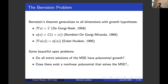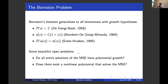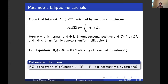Rather than pursue those two questions, a natural thing to ask is whether the Bernstein theorem generalizes to some natural class of geometric equations which has the minimal surface equation as a special example. That's the direction we're going to go now. This is where we bring in the so-called parametric elliptic functionals into the picture.